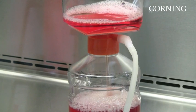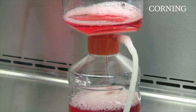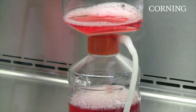The 0.22 micron PES membrane used in the Corning filtration system provides fast flow with low protein binding.